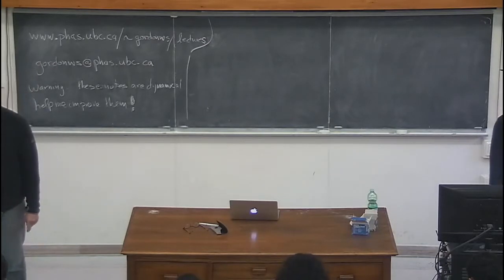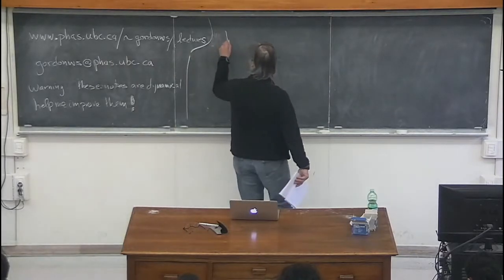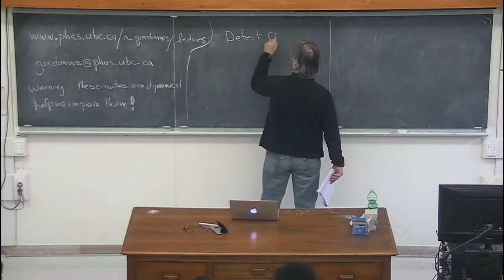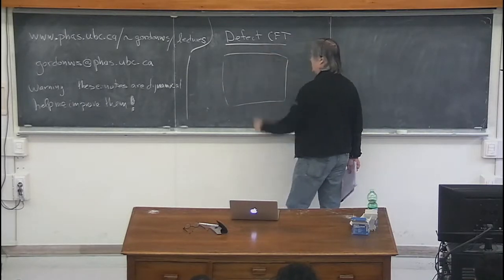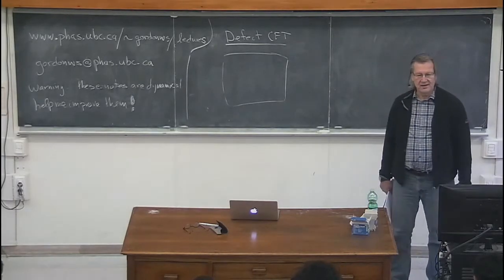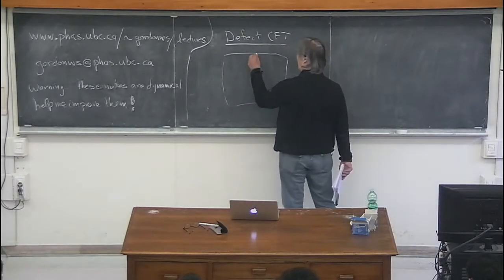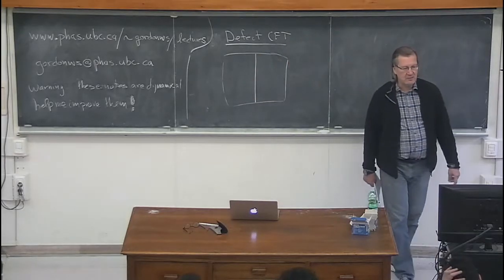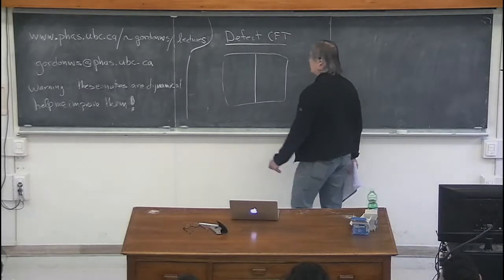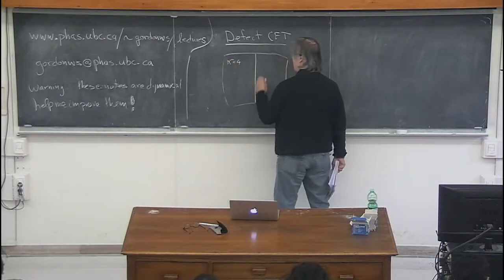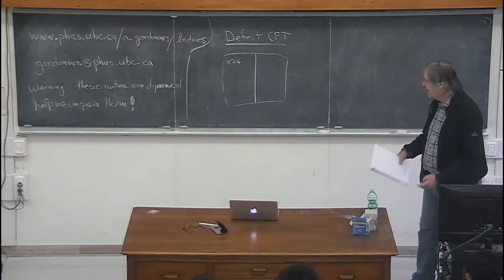Let me begin by talking about defect conformal field theory. We have space-time, four-dimensional, which is filled up with some conformal field theory like N=4, and then we ruin that conformal field theory a little bit by putting a defect in — but some conformal symmetry and supersymmetry survive, so it is still a superconformal field theory of some sort.